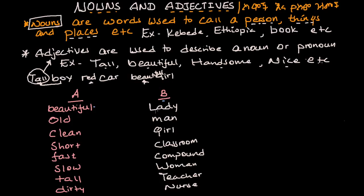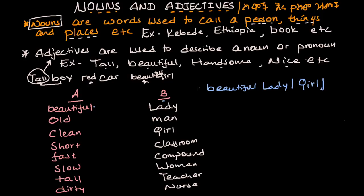Now we combine the adjectives with the nouns. For example: beautiful — beautiful lady, beautiful girl, beautiful teacher, beautiful woman.